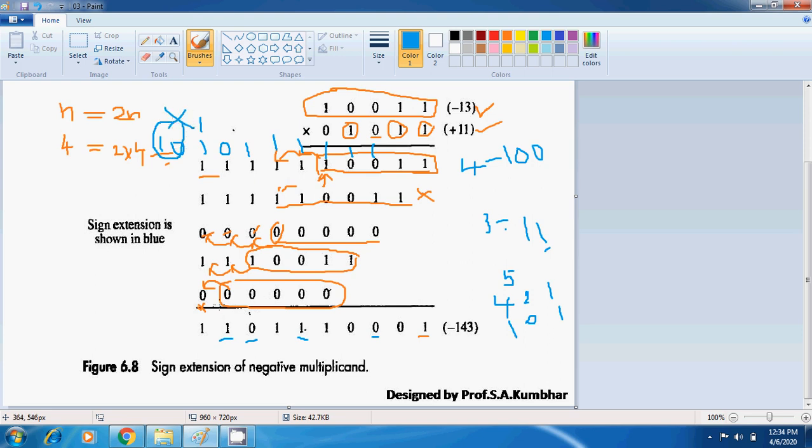Because our size of product is what? 10 bit. So remaining whatever the carry generated here that is to be discarded. So the final product is minus 143. Thank you for watching the video.